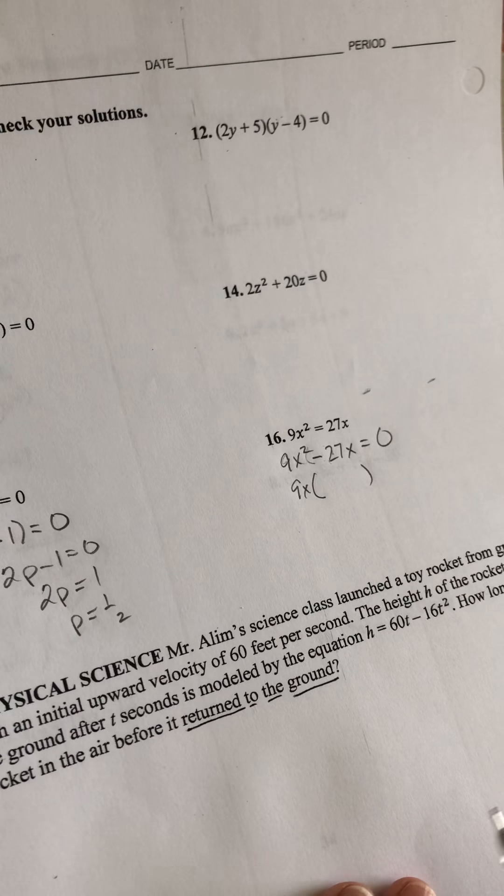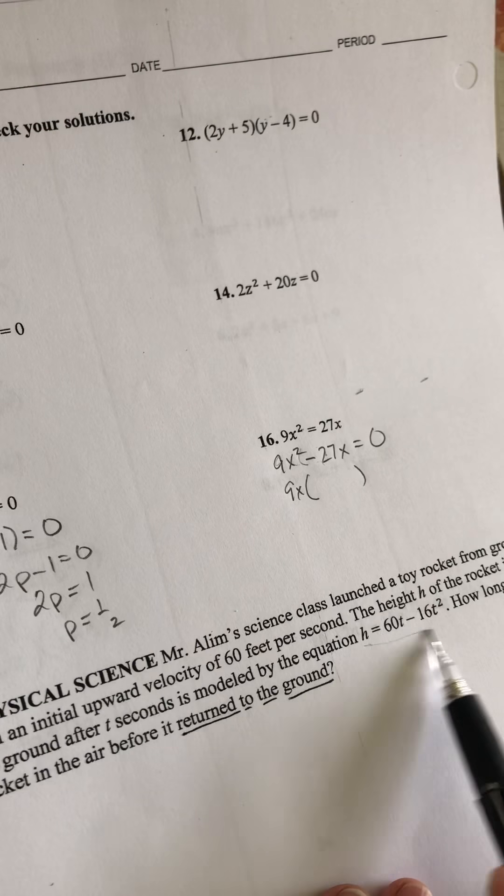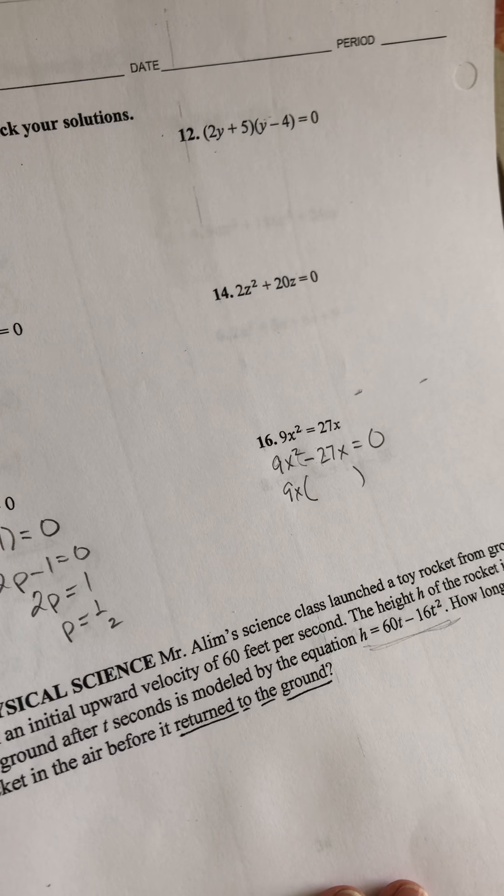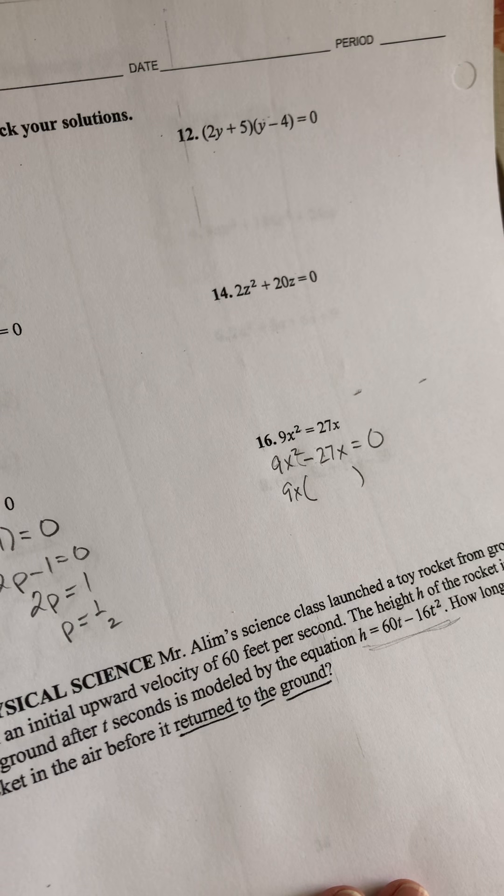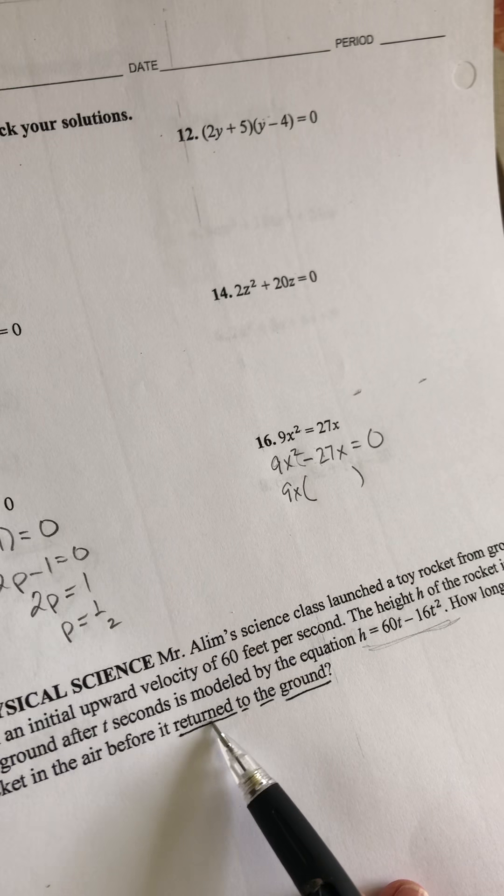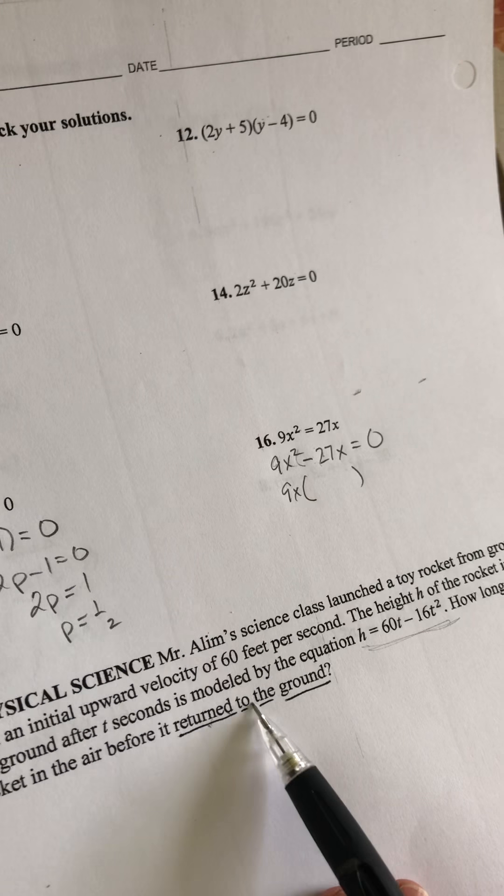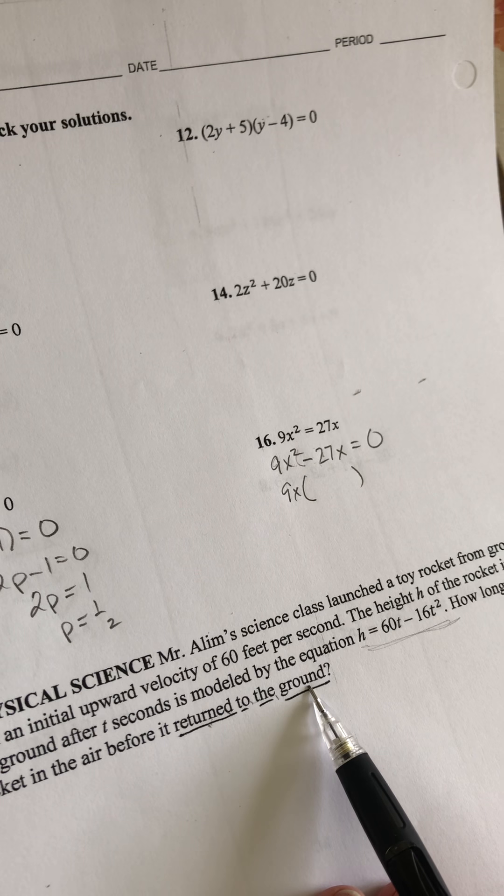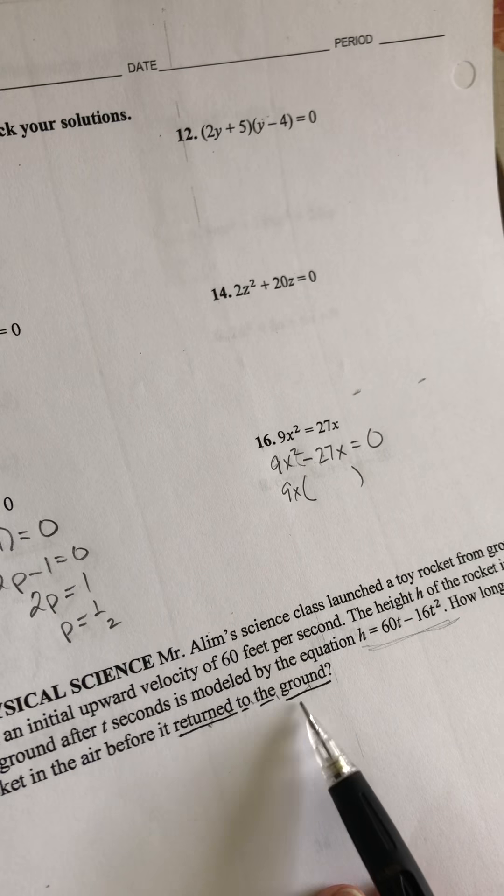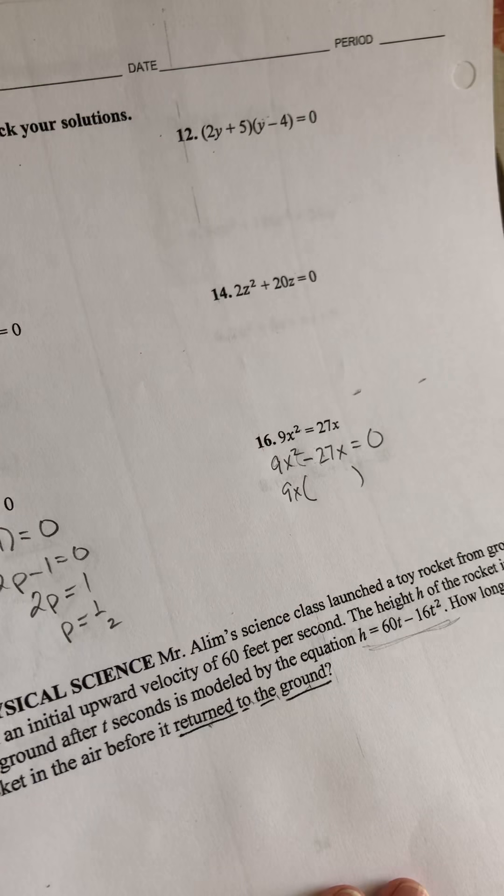Now, number 17, they give you a formula, and they want to know how long the rocket is in the air before it returns to the ground. My only hint is, see, I underlined return to the ground. How high is it when it comes back down to the ground? 0. So h is 0. And I think you can do it from there. I'll talk to you later. Bye.